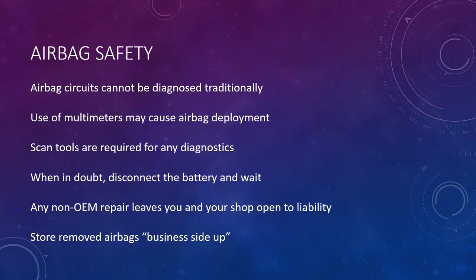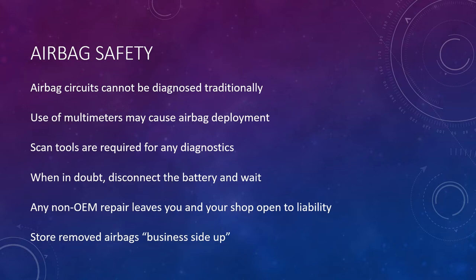Also, store removed airbags business side up. Steering wheel airbags normally have an emblem on them — you need that emblem facing up and away from the technician. If you set the airbag upside down with the business side down and it goes off, the entire airbag becomes a projectile. At best, that causes damage to the vehicle; at worst, it can cause injury to the technician or an innocent bystander. Keep that in mind — business side up.